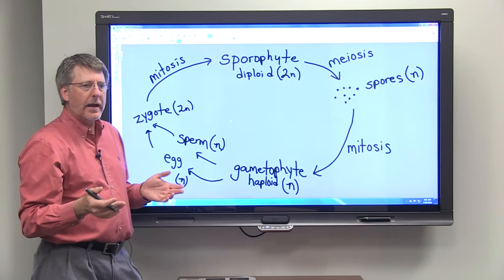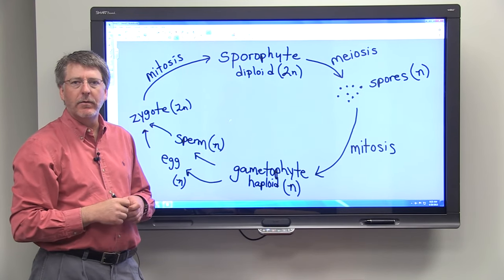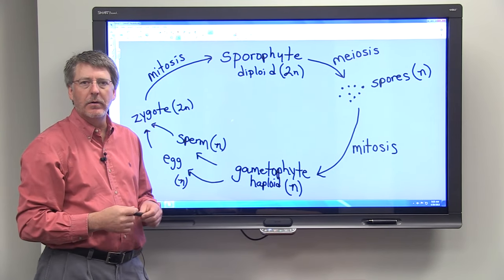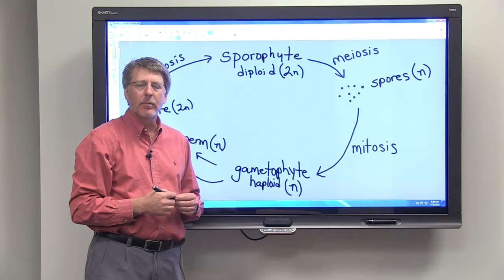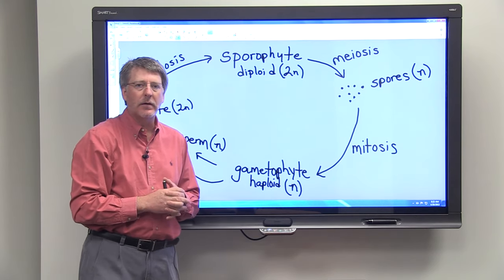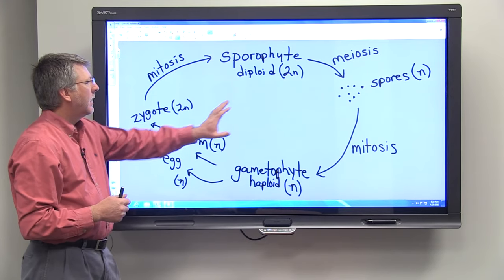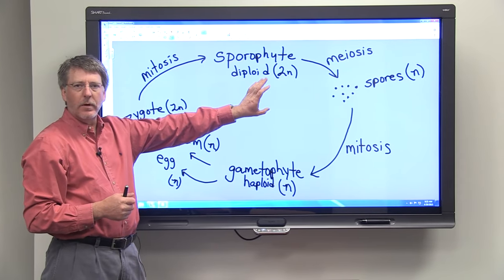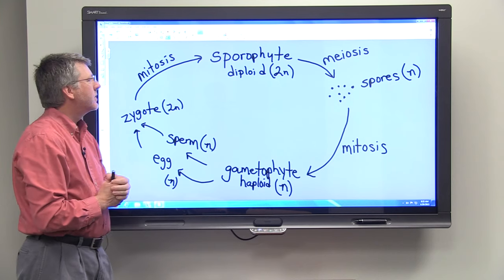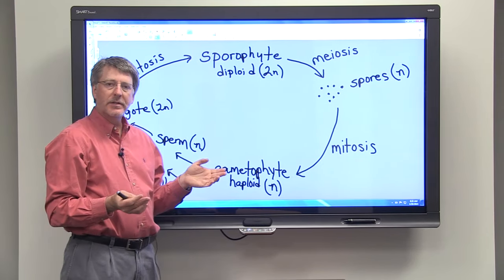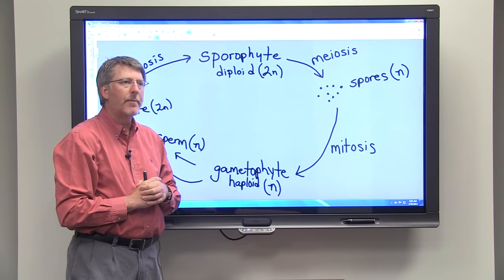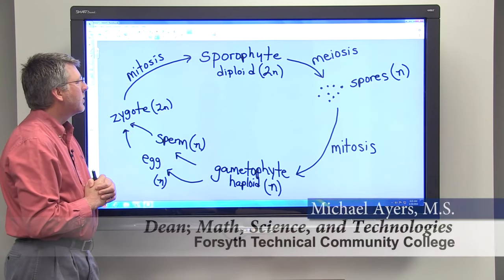Most plants have a dominant sporophyte generation. So if you look out your window and you see a bunch of trees and grass, then you're looking at the sporophyte generation of plants. Think about an oak tree for example. That oak tree represents the sporophyte generation. And that sporophyte generation is diploid, meaning that it has two copies of each kind of chromosome.